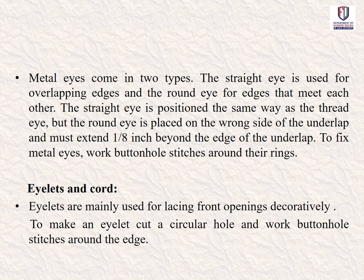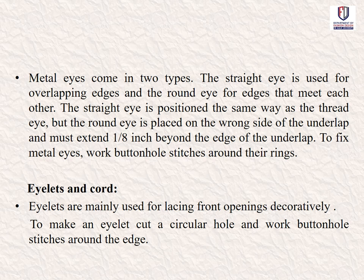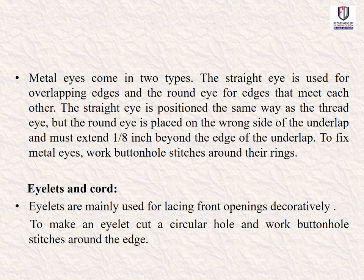Metal eyes come in two types: the straight eye, used for overlapping edges, and the round eye, for edges that meet each other. The straight eye is positioned the same way as the thread eye. The round eye is placed on the wrong side of the underlap and must extend about 1/8 inch beyond the edge. To fix metal eyes, work buttonhole stitches around their rings. Eyelets are mainly used for lacing front openings, and decoratively. To make an eyelet, cut a circular hole and work buttonhole stitches around the edges.